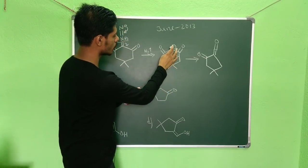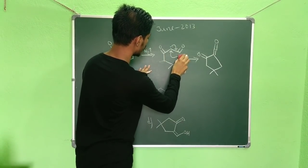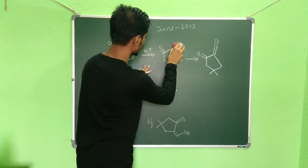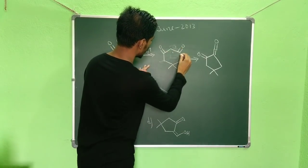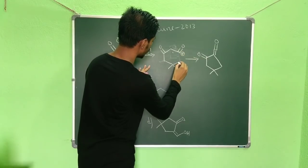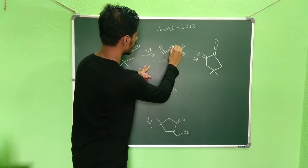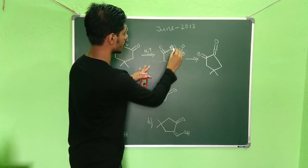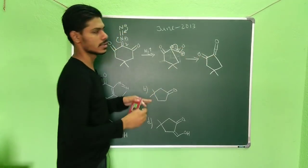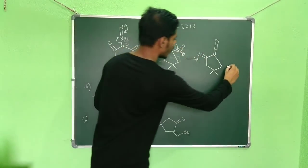Let me show how this happens: when this alkyl group migrates, you get a positive charge over here and these bonds form like this. Then the negative charge pushes back and you get this ketene structure. This is how the ketene forms.